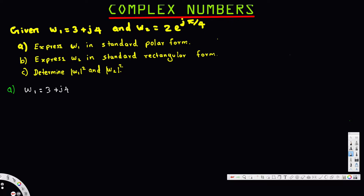Here we know 3 is the real part and 4 is the imaginary part. If we draw this on a graph, the x-axis is the real part and the y-axis is the imaginary part. On the x-axis we have 3 and on the y-axis we have 4. The complex number is plotted at that point, and we need to find the distance from the origin and the angle.